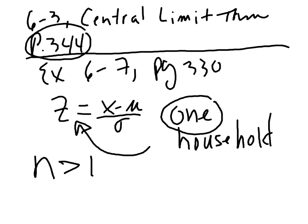What we end up with is: the mean that we continually find becomes a random variable, and the different sample means constitute a sampling distribution of sample means. So instead of a distribution of individual variables from a data set, we now have a distribution of sample means.